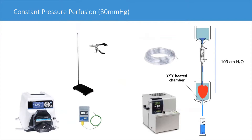Specifically, for the constant perfusion pressure mode, the perfusion pressure is determined by the distance between the heart and the top of the perfusate reservoir. To achieve an 80 mmHg perfusion pressure, the surface of your perfusate and the heart should be maintained at a vertical distance of 109 cm. This can be achieved by pumping the buffer to the reservoir at the same rate as the perfusion flow. This distance can be adjusted according to the intended pressure needed in the particular experimental setting.